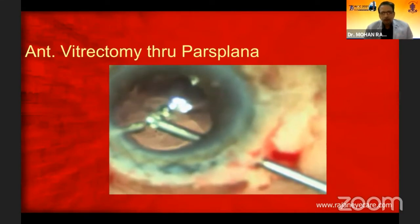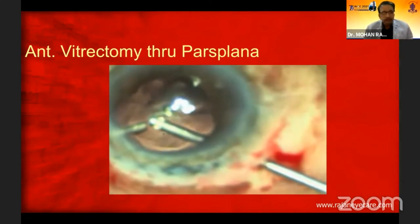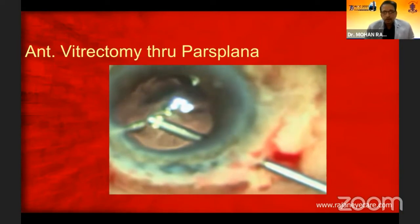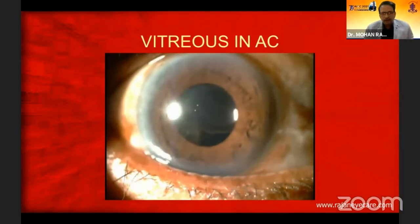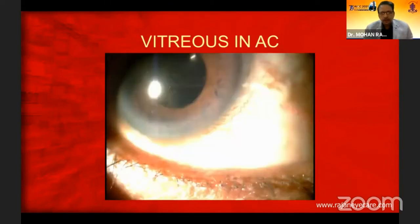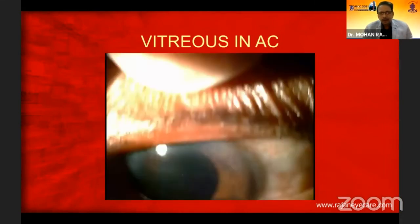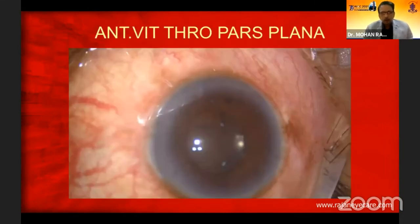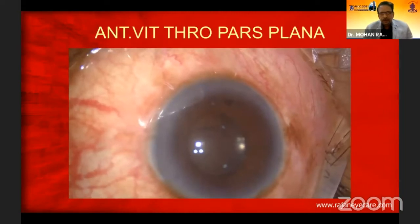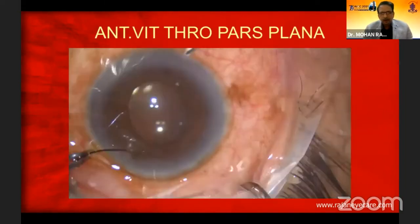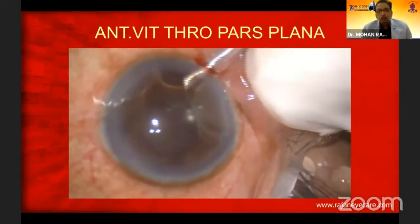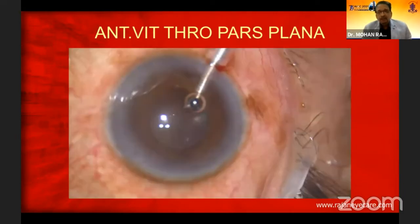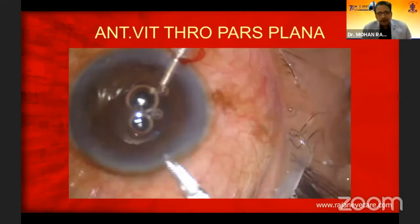Nowadays the pars plana route, as advocated by Abhay Vasavada, is supposed to be very easy. You can see this particular patient had vitreous in the anterior chamber — there's a blob of vitreous with eye pressure pushing as well. I'm trying to go in and remove the vitreous by having an anterior chamber maintainer. But more importantly, I want to remove the vitreous more effectively from behind, so always create a pars plana entry.